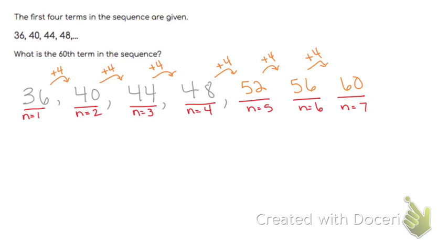So if we zero in on the fifth term, when n is 5. What if we didn't know that this was 48 and this is 44? We don't need to know. Let's just erase this. What if we just knew that the first term was 36 and that we were adding four each time? Could we have found the fifth term?